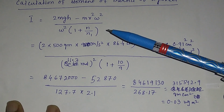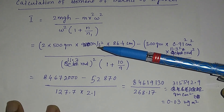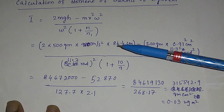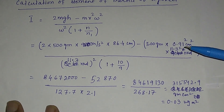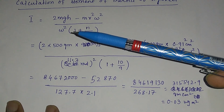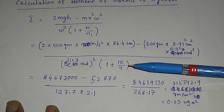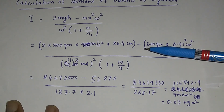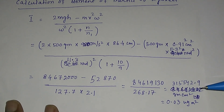Substituting the values: m = 500 g, g = 980 cm/s², h = 86.4 cm, r = 0.91 cm, ω = 11.3 rad/s, n = 10, n1 = 9. Calculating these values gives the moment of inertia of the flywheel as 315.542 g·cm². This can also be converted into kg·m².